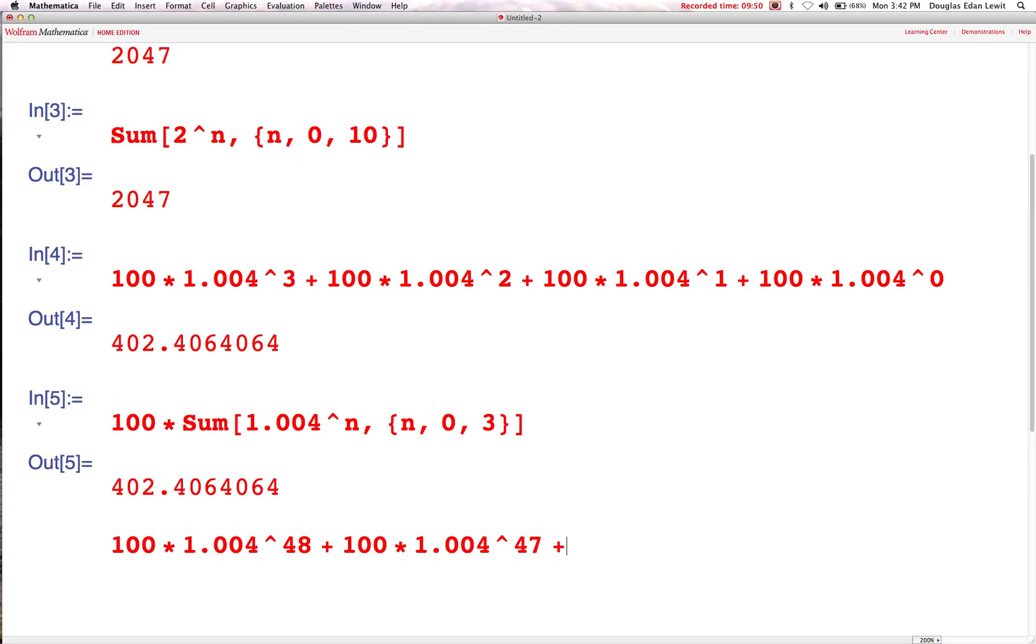I mean, I have to do that all the way down to 0. 1.004 to the power of 46, and then 45, and then 44, all the way to 0. No way. We're not going to do that because it's a waste of time. It's way too much work. So, instead, let's use the technology that's available to us. Why not take advantage of the technology? It makes our lives so much easier.